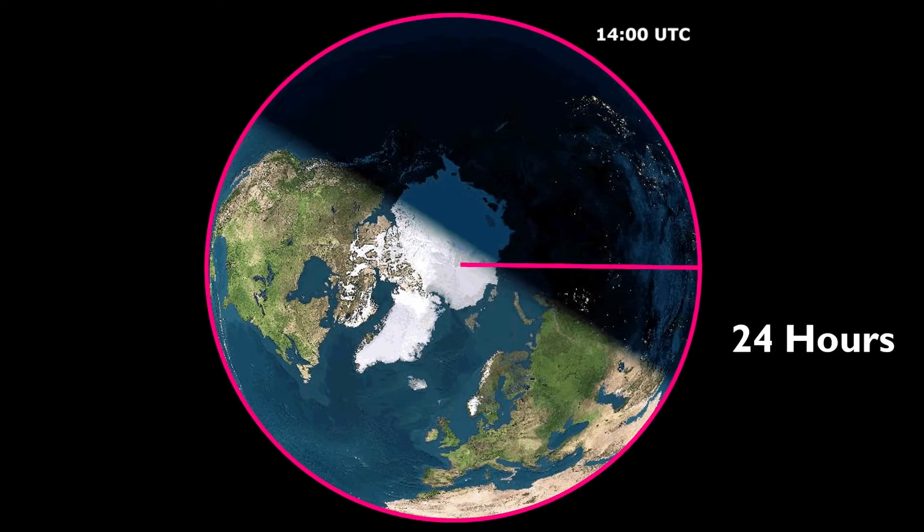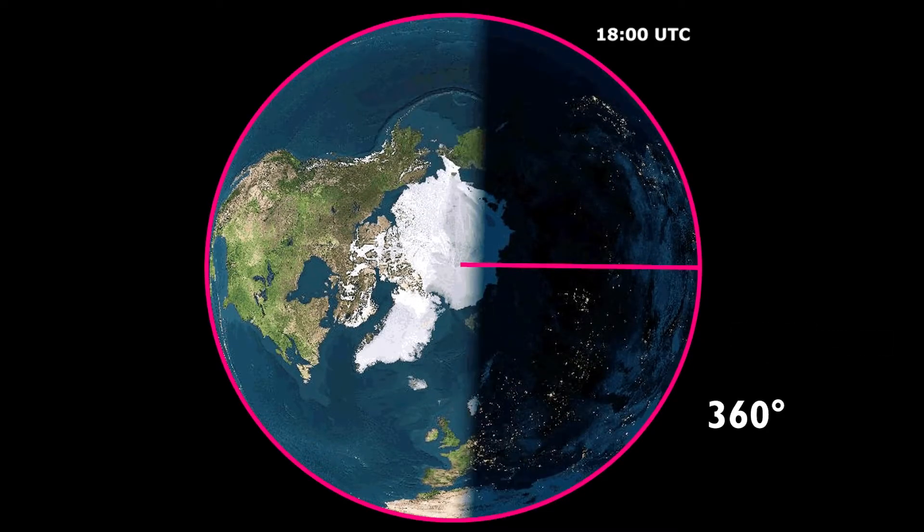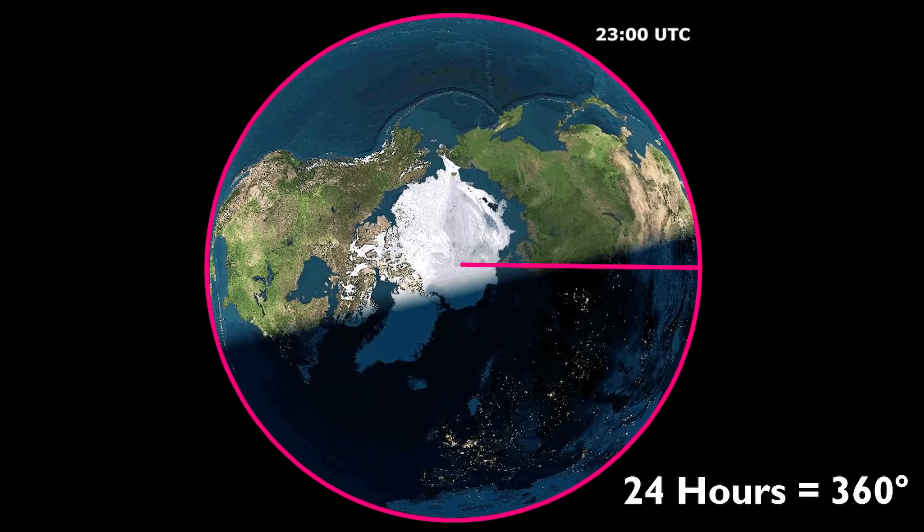So if we say that one full revolution is equal to both 24 hours and 360 degrees, then 24 hours itself is equal to 360 degrees.